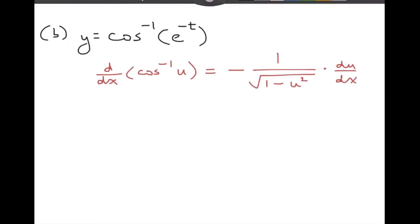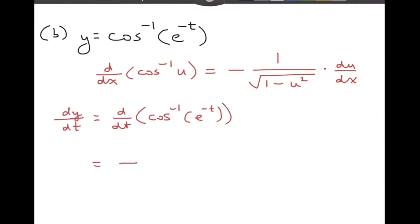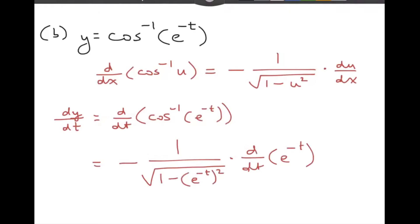When we find the derivative with respect to t — because we want dy/dt — it's going to be the derivative with respect to t of inverse cosine of e to the negative t. We're going to have negative one over the square root of one minus the square of e to the negative t, times the derivative with respect to t of e to the negative t. The bottom simplifies to the square root of one minus e to the negative 2t.